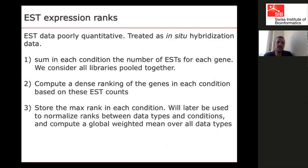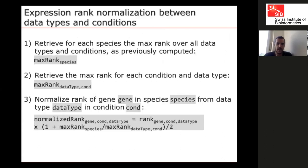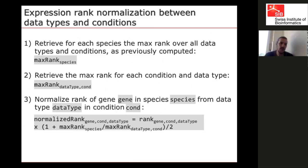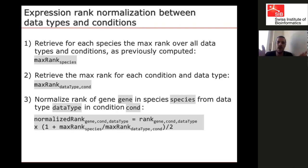For ESTs, we pool all ESTs in a condition, count the number per gene, and rank genes based on that. Then we perform normalization across all data types: we look at the maximum rank in a given species and normalize each condition's ranks from a specific data type relative to this species-wide maximum. For each data type in each condition, we compute ranks, average them, and normalize across conditions and data types so everything is comparable. A global weighted mean is then computed over all data types.